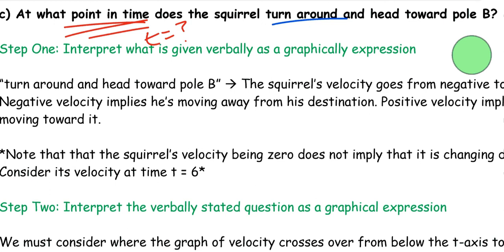Now, how do you figure out turning around and heading towards pole B? How do you figure out turning around mathematically? Well, let me just go ahead and remind you that that's when the velocity changes sign.